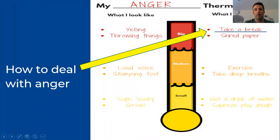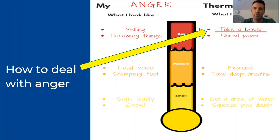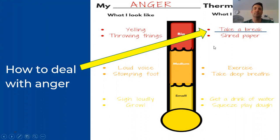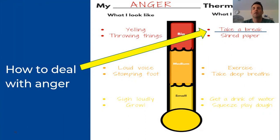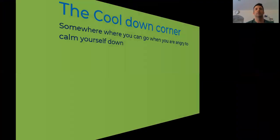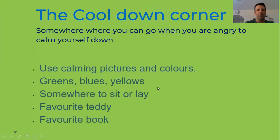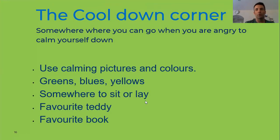Let's go back to our anger thermometer. The big yellow arrow is pointed all the way up to the red zone, where somebody is feeling very angry. One of the options there is to take a break — remove yourself from the situation to try and make yourself feel better. We're going to focus on that now and look at something called the cool down corner.